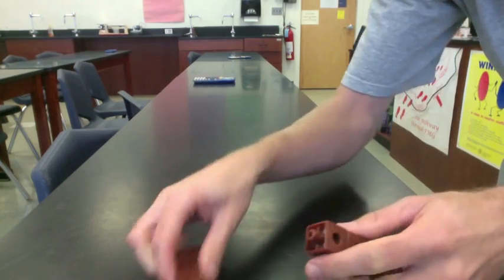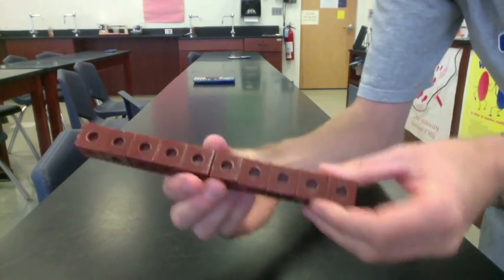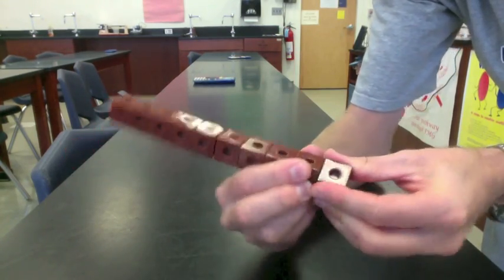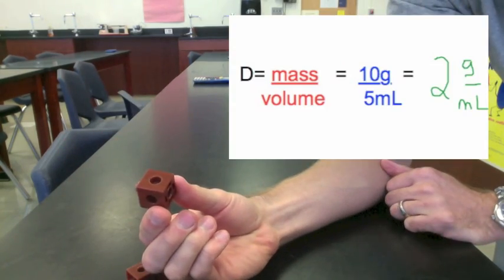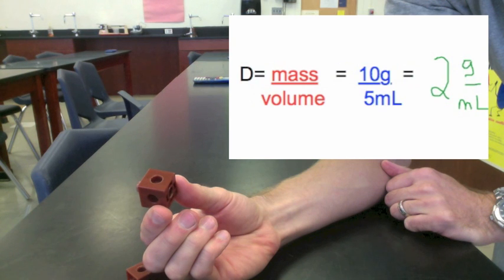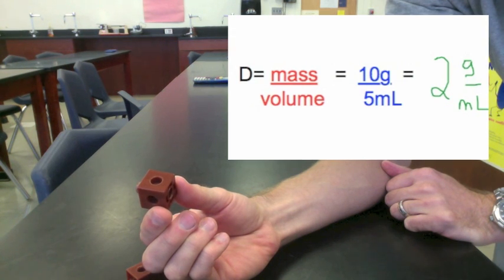The same thing happens if you break the object not in half, but into 10 pieces. This small piece has a mass of 10 grams, but a volume of 5 milliliters. The density is still 2 grams per milliliter.